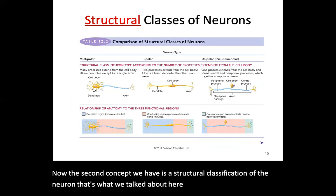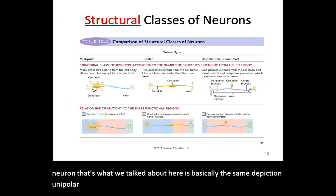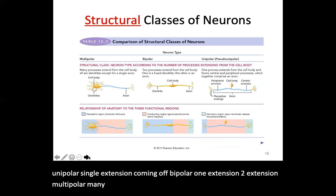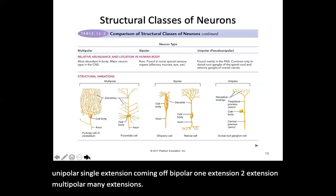Unipolar has a single extension, bipolar has two extensions, and multipolar has many extensions.